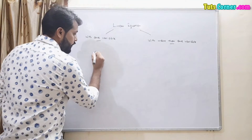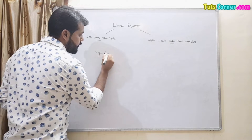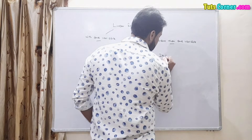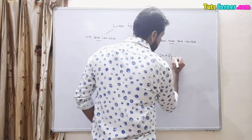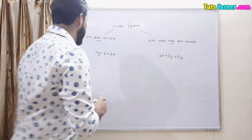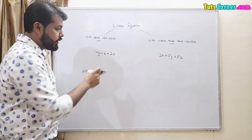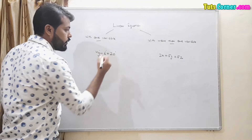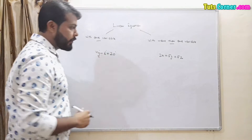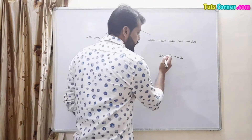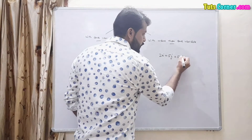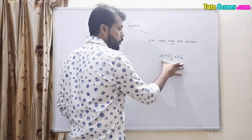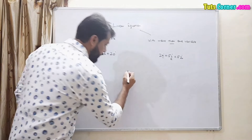For example, 4y minus 6 equals to 20 — this equation has only one variable, and all the terms have degree of one, so this is a linear equation with one variable. In another example, the terms have degree one but there are two variables, so that is a linear equation with two variables.